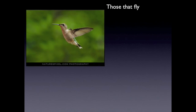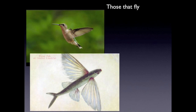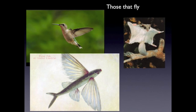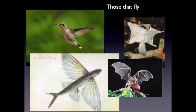How about things that fly? We always think that birds fly, of course, but there are other things that fly. There's even a fish that flies — well, it doesn't really fly, it glides. There are animals that glide, animals that fly, and mammals that fly. They're able to do that because they have the structure.